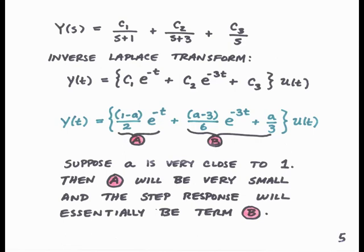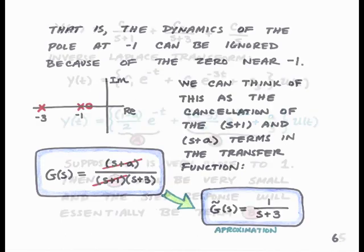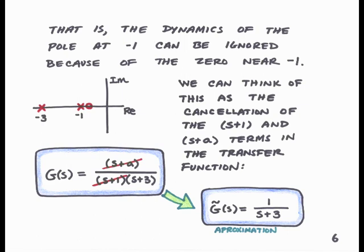I'm going to label the first term as capital A, and the second two terms as capital B. Suppose that the coefficient a is very close to 1. Then the first term, capital A, will be very small, since (1 − a) will be close to 0. In this case, the step response will be that given by term B. So the response of the second-order system will behave like the response of a first-order system to a unit step.